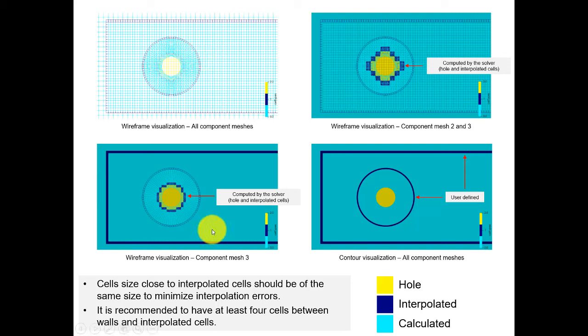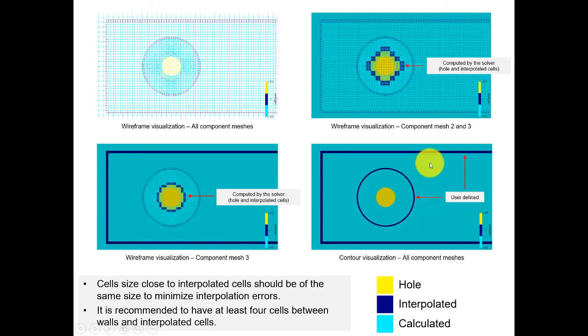The hole and interpolated cells are computed by the solver; the only thing the user defines is the overset patch. Putting everything together in a visualization, you can see that the two items defined by the user are the overset patches, and the rest is computed by the solver automatically. The solution is interpolated between meshes by the solver, and you should ensure that near interpolation regions, the solutions are similar.